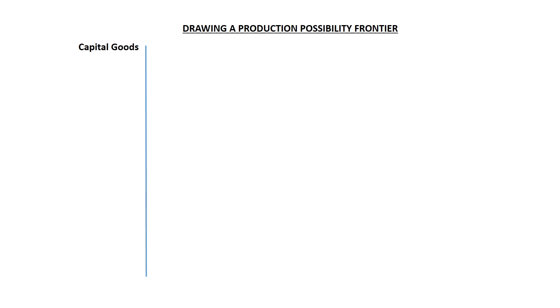In this example, with scarce factors of production, an economy may be able to produce capital goods, which are goods that produce other goods, for example, machines. Or an economy can produce consumer goods, which are goods produced by capital goods. But this could be any combination of goods produced from scarce resources, for example, tables and chairs made from the scarce resource of wood.